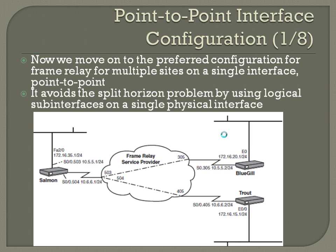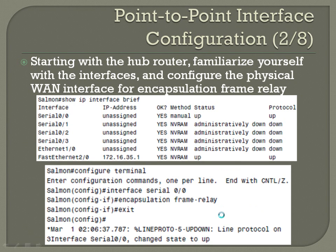Here's our network design, very similar to the last one — a hub with two spokes. On the hub, it's got one serial zero connection but two sub-interfaces configured: serial 0/0.503 goes to one spoke and serial 0/0.504 corresponds to the other side of the network. Starting with the hub router, configure the physical WAN interface for encapsulation frame-relay. Show IP interface brief to identify the WAN and LAN. Serial zero is our WAN. Config T, interface serial 0/0, encapsulation frame-relay. Exit — we're using Cisco equipment so you don't need the IETF option.